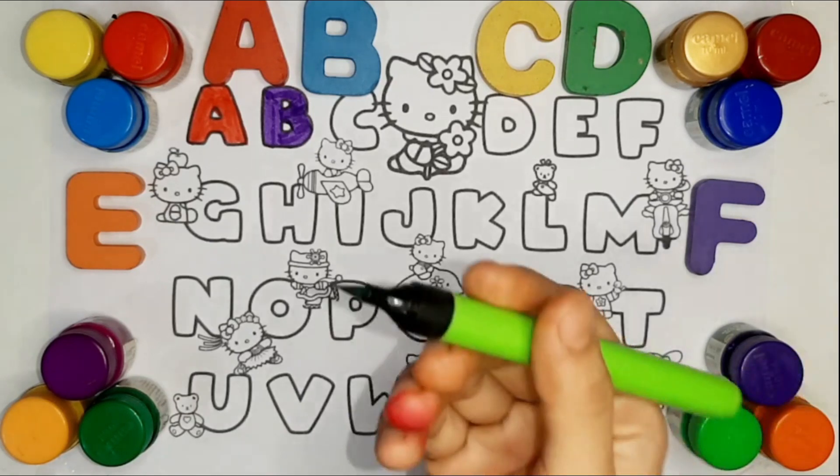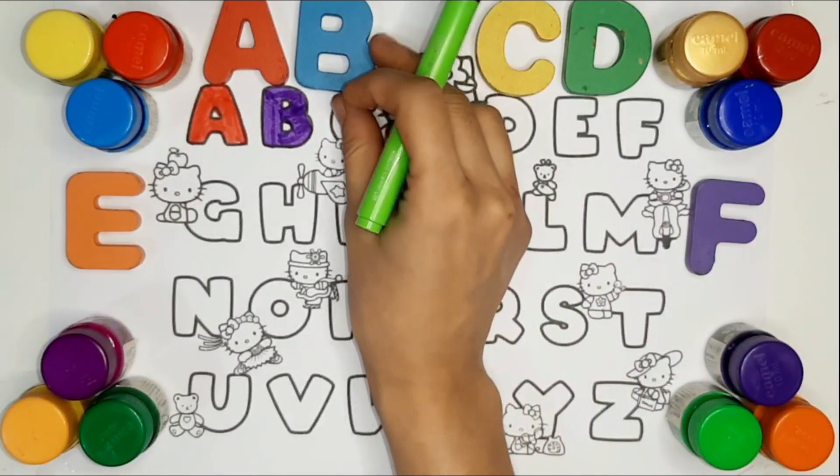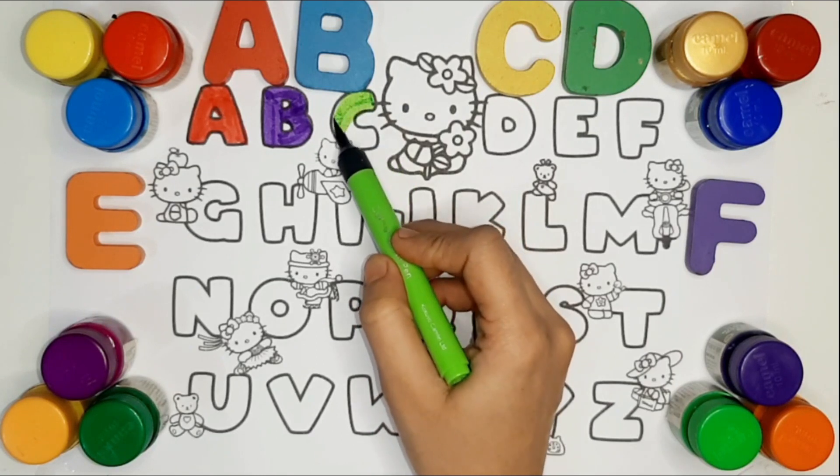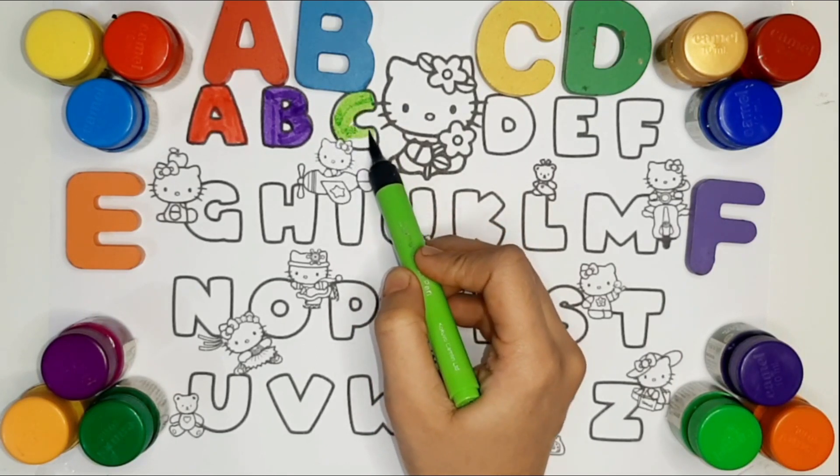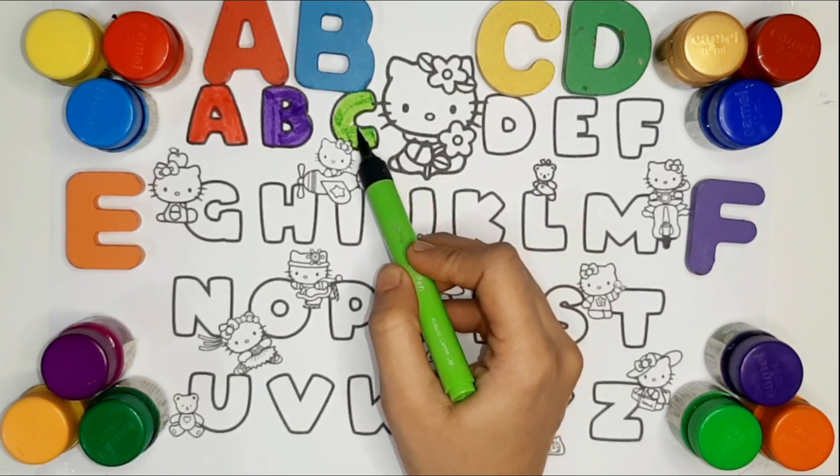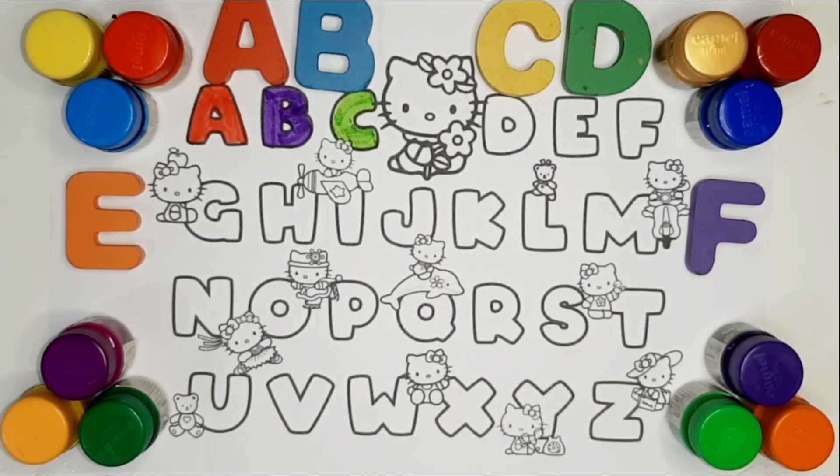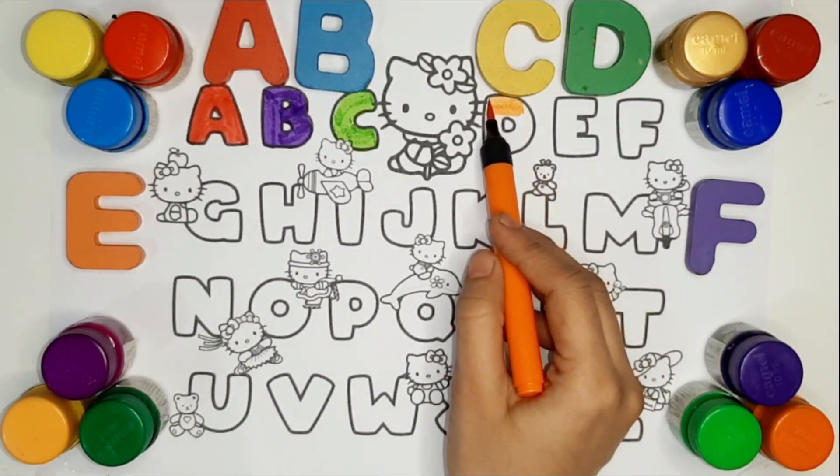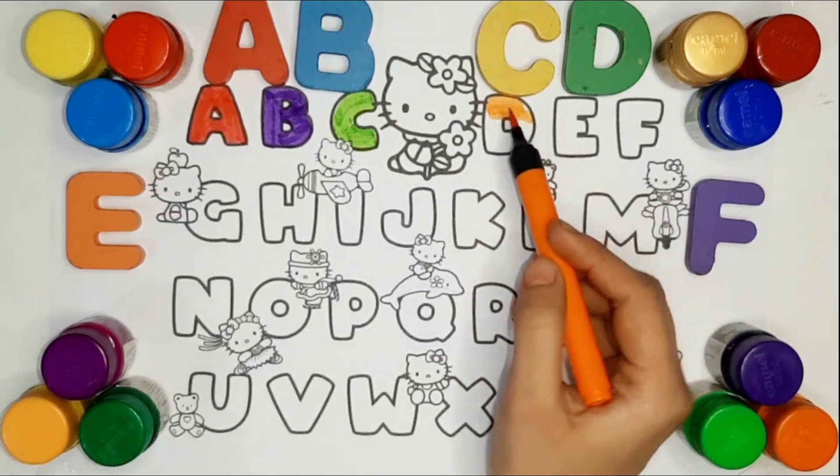Parrot green color C, C for Carrot. Orange color D for Dolphin.